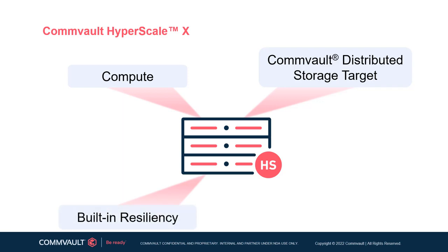The built-in resiliency of Commvault Hyperscale X combines system architecture and best practices to deliver the required level of service. The platform's resilience is based on 4+2 erasure coding, providing multi-level tolerance of hardware failure. At the node level, Hyperscale X uses mirrored root disk and separate subnet VLAN for public data protection traffic and private storage pool traffic over bonded network interfaces for enhanced resiliency.